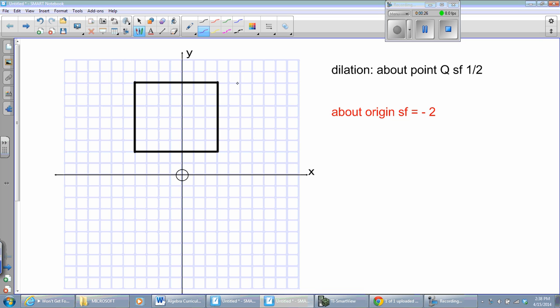we're going to do dilation as a rectangle, and we're going to do it about point Q with a scale factor equal to one-half. All right, let me call this point P, and we'll call this Q. This will be R, and this will be S. Now, when the scale factor is one-half about point Q,